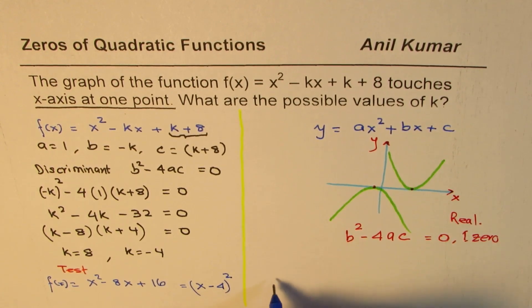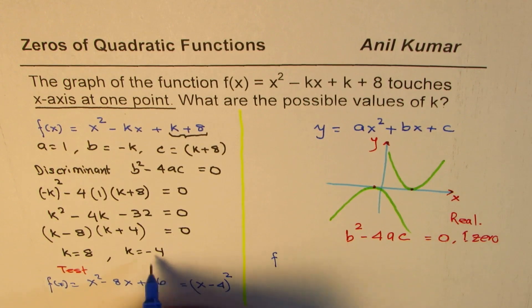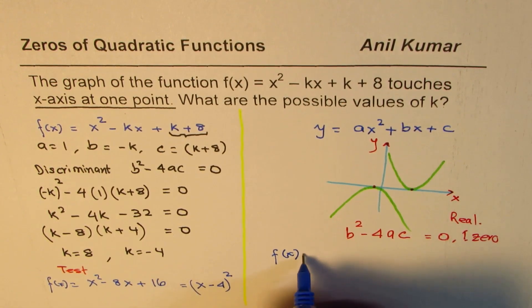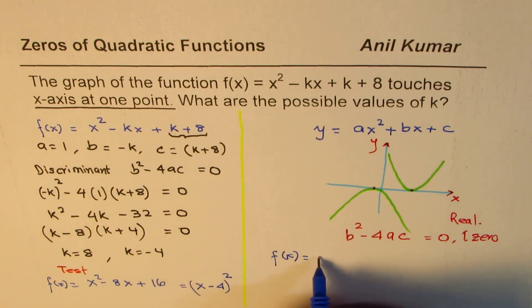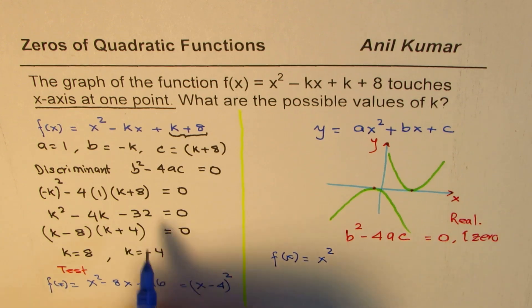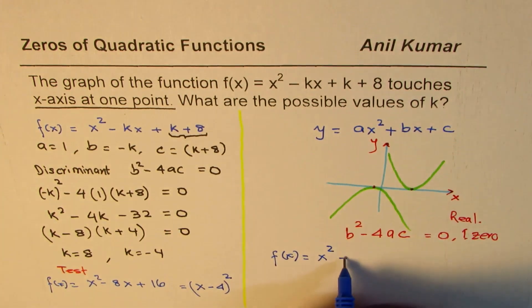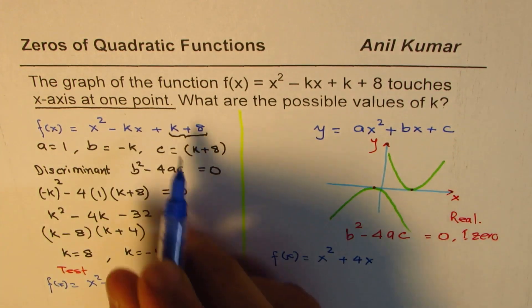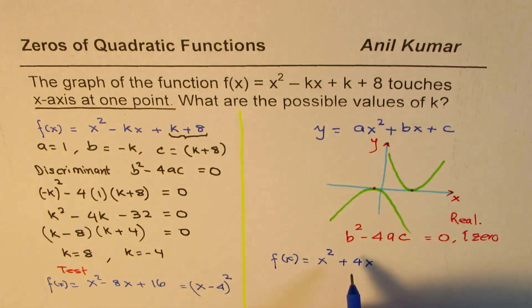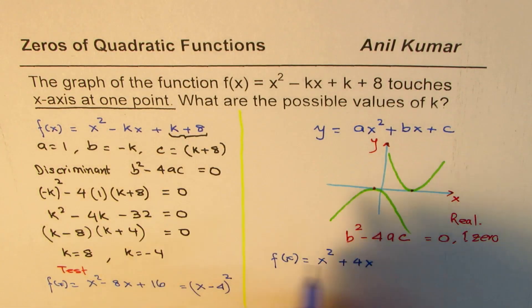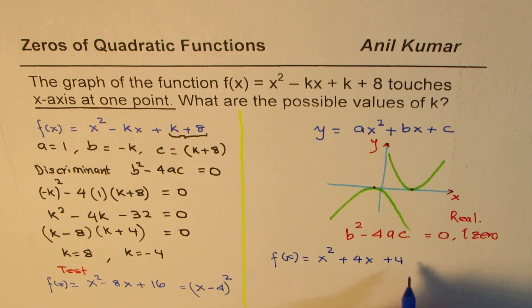Similarly, you could also write a function. Let me rewrite with minus 4. So f of x equals to x square, so if I write minus 4, it becomes plus here, plus 4x minus 4 plus 8 will give me plus 4. And that could be written as x plus 2 whole square.